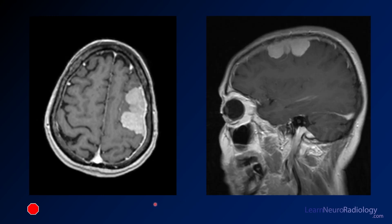Here we have a couple of additional post-contrast T1 images from thin-slice axial and sagittal views. You can see an abnormality there. Luckily, neuroradiology makes it pretty easy — there's a lot of asymmetry there which can really help you.